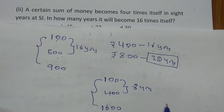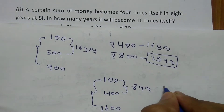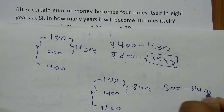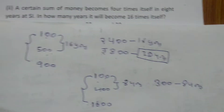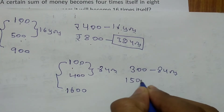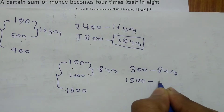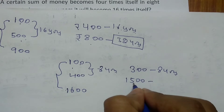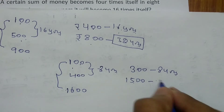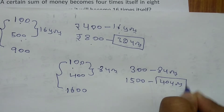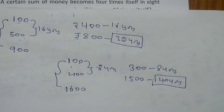How many rupees increment happened? From 100 to 400 is 300 rupees, which happened in 8 years. From 100 to 1600 is 1500 rupees. Using the unitary method: 300 times 5 equals 1500, and 8 times 5 equals 40 years. So the answer for the second question is 40 years.